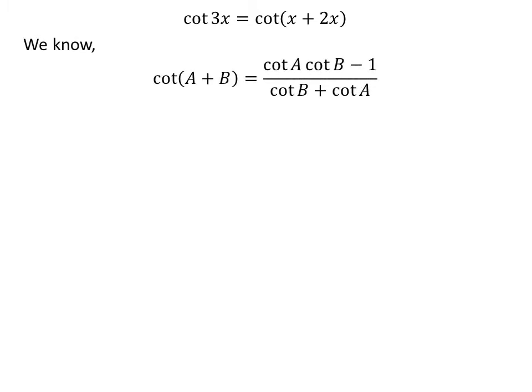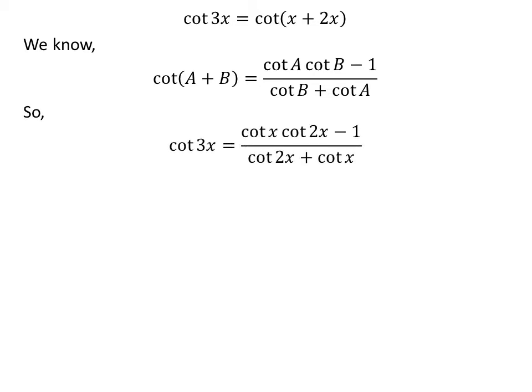We know the famous trigonometry identity: cotangent of (a + b) is equal to cotangent of a times cotangent of b minus 1, upon cotangent of b plus cotangent of a. The proof of this trigonometry identity is given in the video appearing in the upper right corner, and the link is also given in the description section.